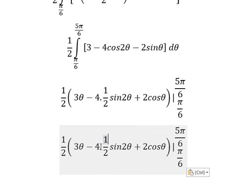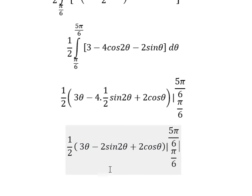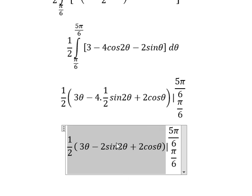So we put the bounds from pi over 6 to 5 pi over 6. 4 divided by 2, we have 2. And now we can put the bounds in here.